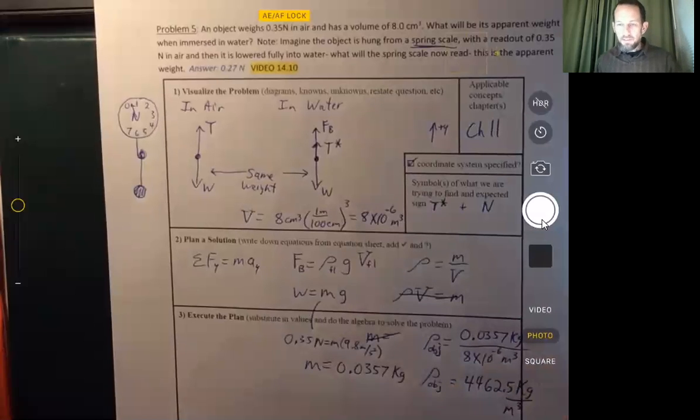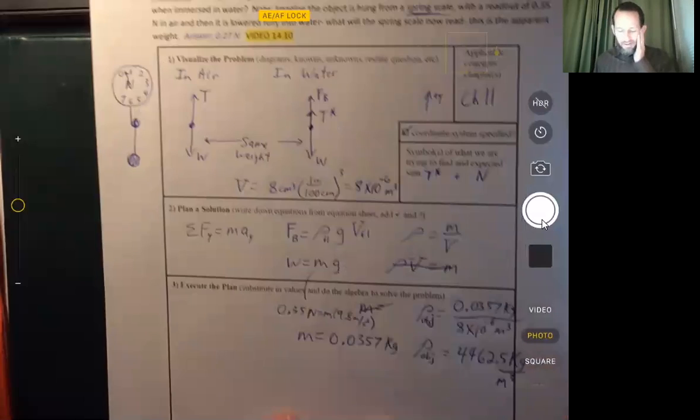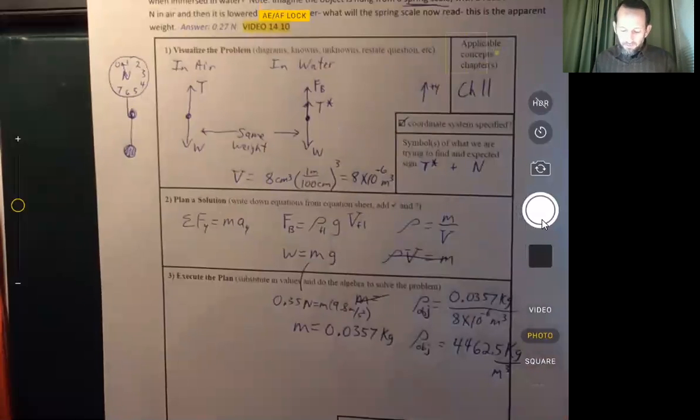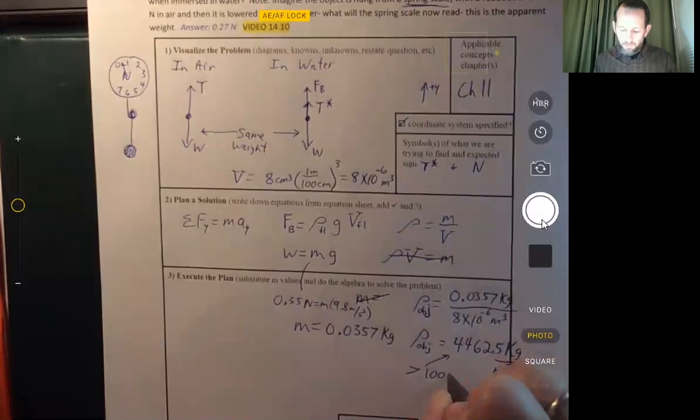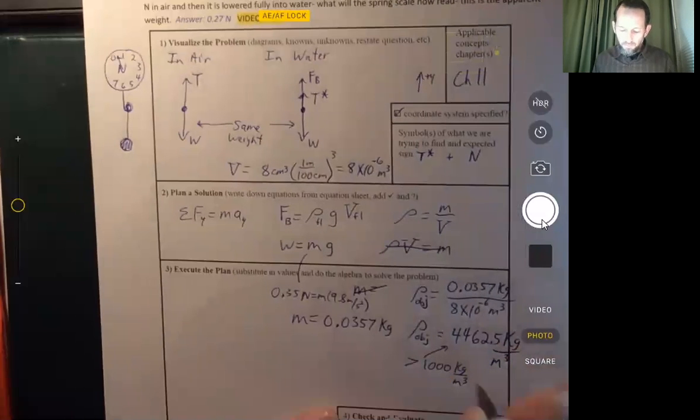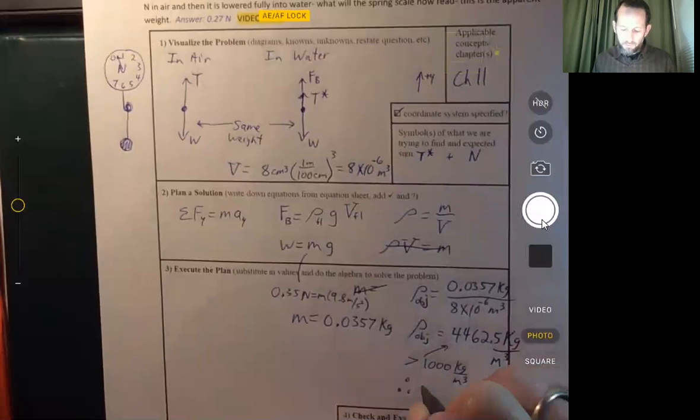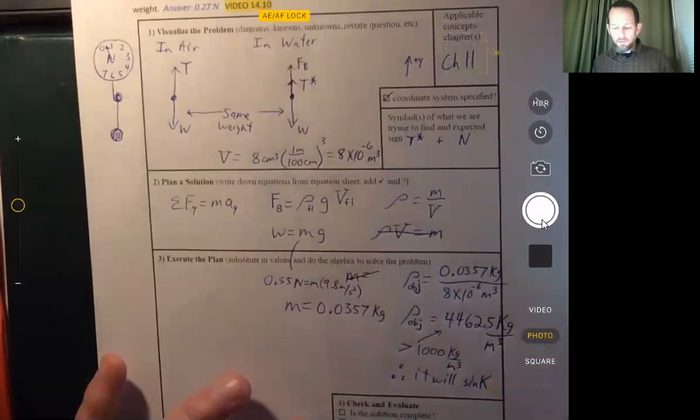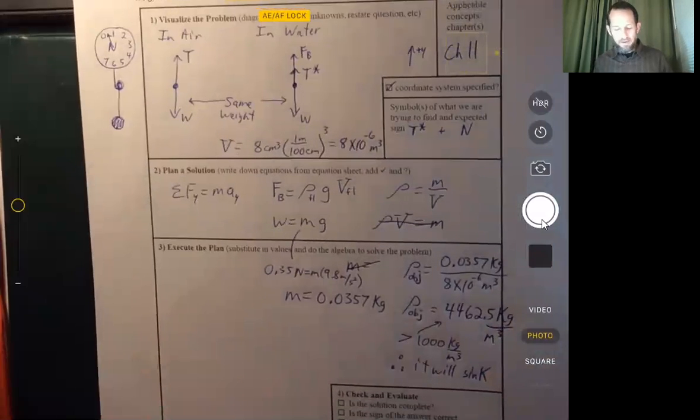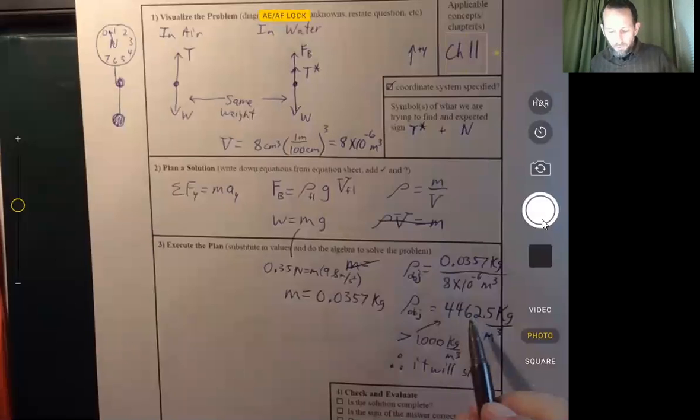So first of all, we can see that that value is greater than 1,000 kilograms per cubic meter. Why is that important? Well, that means it's going to sink. And why do I even mention that? Well, if we got a density here of, say, 800 kilograms per cubic meter,